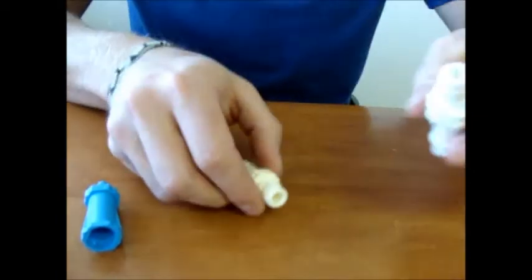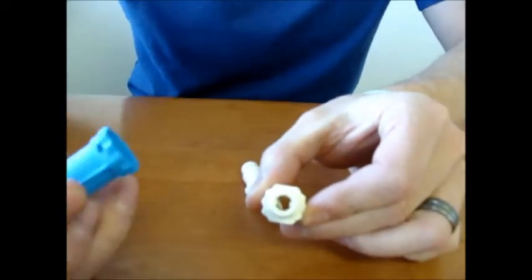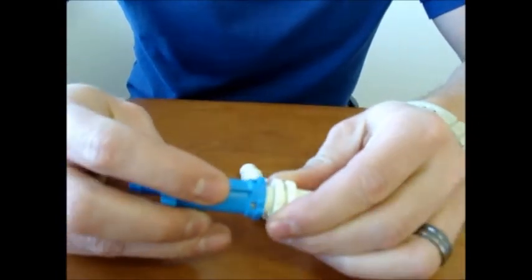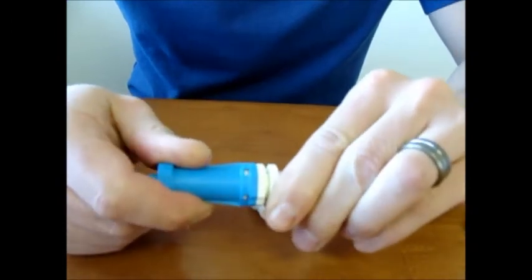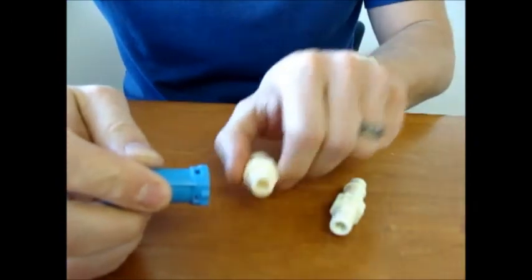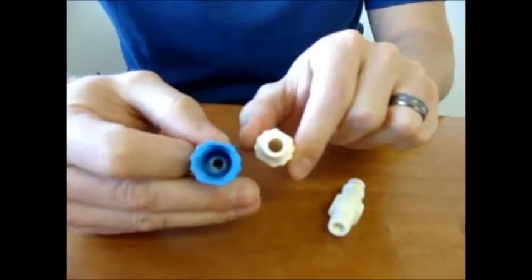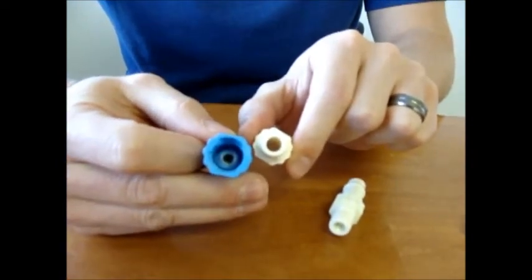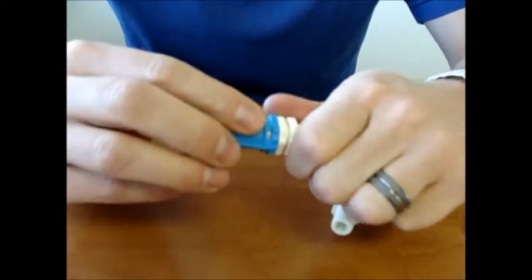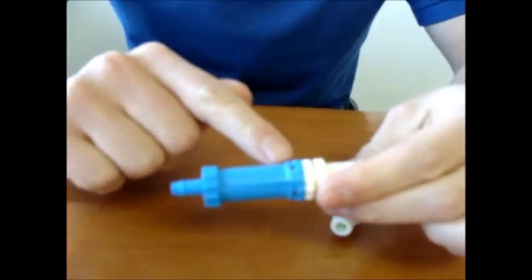Now the reason being is because the Y product will activate and open the shuttle. The W class will not because those little teeth aren't there to activate the teeth inside the shuttle. So once you put it together, the shuttle stays closed.